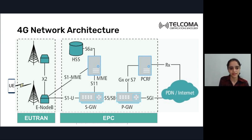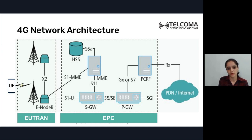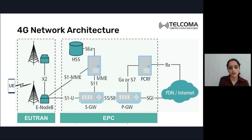The EPC is divided into two planes. The control plane handles all signaling, while the user plane handles data transfer. So the evolved packet core contains both a control plane and a user plane.